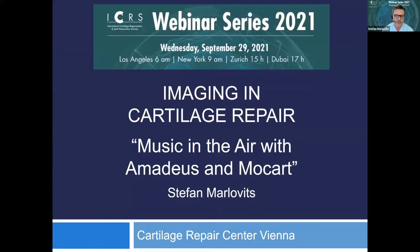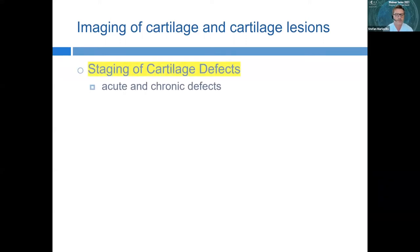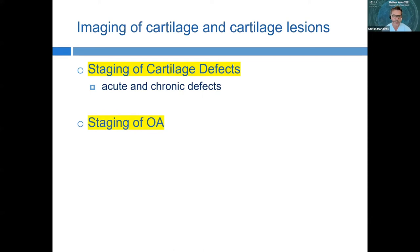Welcome again to our imaging session — imaging and cartilage repair. The imaging of cartilage and cartilage lesions is very important because we want to have staging of cartilage defects. We have acute and chronic defects, and we want to know the stage, location, and size of these defects, as well as what surgical approaches are appropriate.